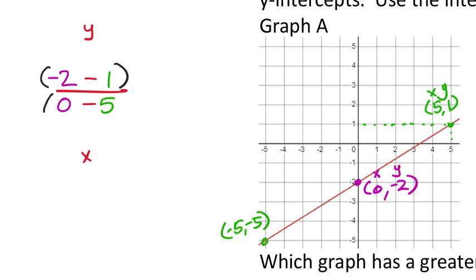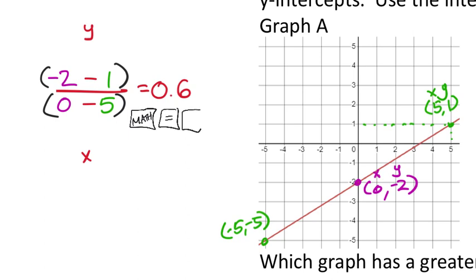I'll put this in parentheses in the calculator: (negative 2 minus 1) divided by (0 minus 5). Pushing math, enter, enter changes the decimal into a fraction: three-fifths. That's my rate of change for graph A.